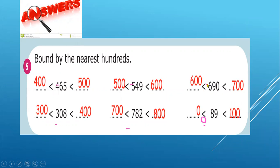Now 690, it's between 600 and 700. Now I'm going to explain the last part here. As I said, there is no hundred digit. So 89, it's between 0 and the first number that has 100 is 100. Thanks for watching.